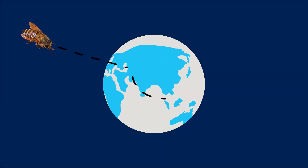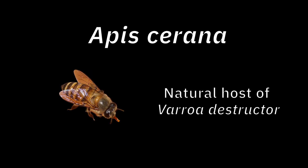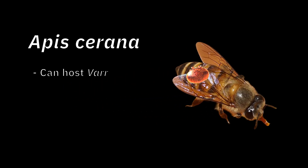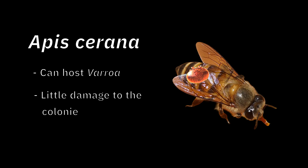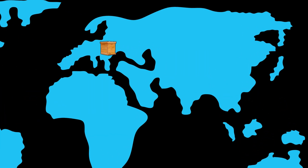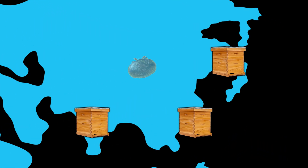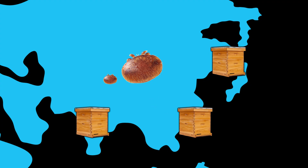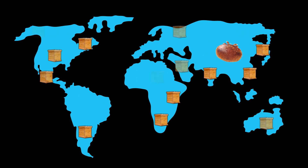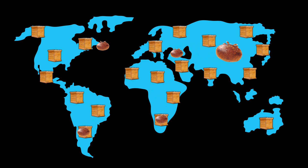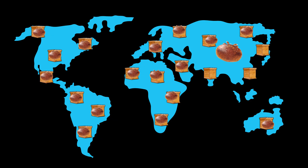Why is varroa so damaging to our honey bee colonies? Most species of Apis honey bees live in Asia, and one species in particular, Apis cerana, is actually the natural host of Varroa destructor. Apis cerana can host this mite with very little damage to the colonies. On the other hand, beekeepers moved honey bee colonies from Europe — specifically Apis mellifera, the species kept most broadly around the world — into Asia, where Apis mellifera first encountered Varroa destructor. Apis mellifera had no natural varroa in its colonies, so this was the first time it had ever seen a varroa species, let alone destructor specifically. And once destructor made it into Apis mellifera colonies, the rest is history.